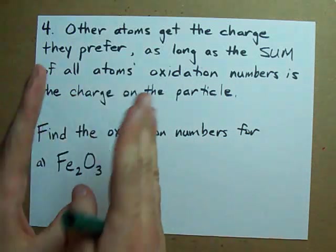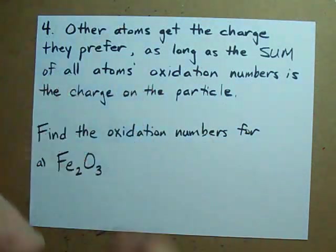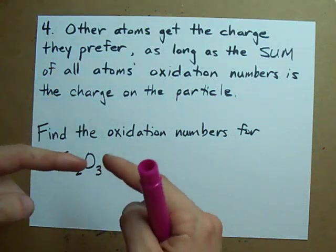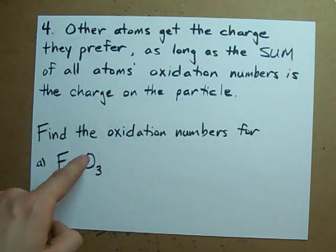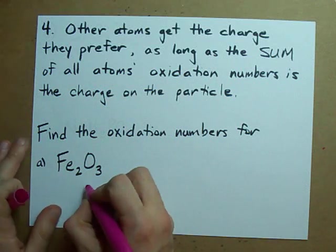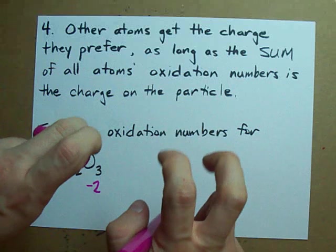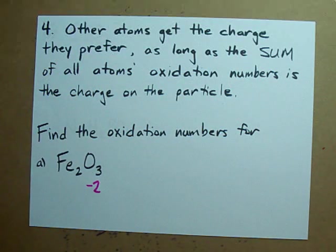Oxygen's always minus two. Here's some oxygens. Each of these oxygens has a charge or oxidation number of minus two.